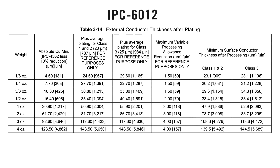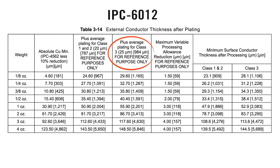Looking at external or outer layers, it becomes a little bit more complex, as the industry standard IPC 6012 relates to base copper weights rather than finished copper. Table 3.14 shows us that the minimum surface conductor thickness, or the finished copper, is equal to the absolute minimum copper foil thickness, plus an average copper plating thickness of 20 microns, or 0.8 mil, for class 2, and 25 microns, or 1 mil, for class 3, minus the maximum processing reduction allowance.